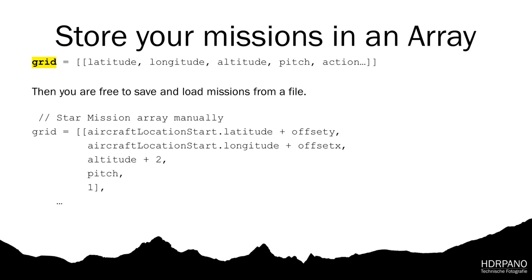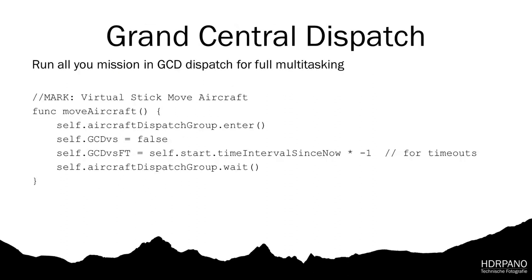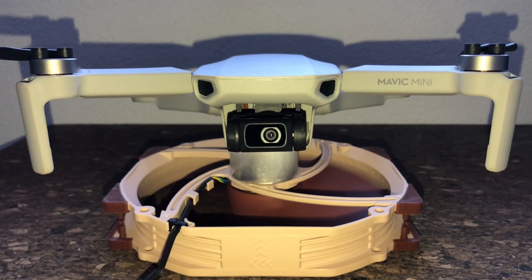The easiest way to store the missions is in a simple array, so you can save it into a file, load it from a file, and add any actions you like. To iterate through the mission it's a simple for loop where we go through the coordinates and read the actions needed for each coordinate. All movements of the aircraft are handled by the Grand Central Dispatch method. I add a dispatch group for all my virtual stick methods — like yawing or moving forward — so I can enter it, wait, and then check if the aircraft has reached the waypoint or not. We can also add timeouts for each step.